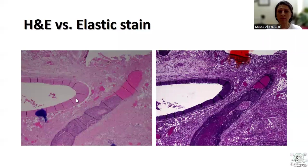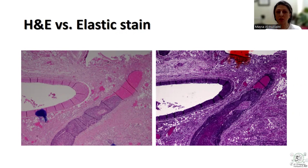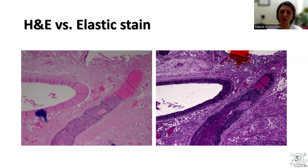This again emphasizes the importance of elastic stain in the setting of colorectal carcinoma in order to support the presence or absence of extramural venous invasion. Remember that in some schools, patients will receive chemotherapy if the pathologist mentions the presence of extramural venous invasion even in the absence of evidence of distant metastasis. I hope you find this tip useful in your practice. Thank you.